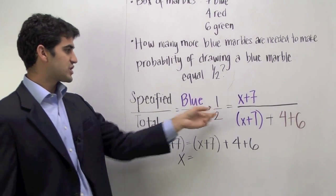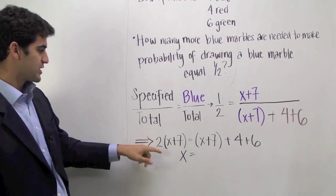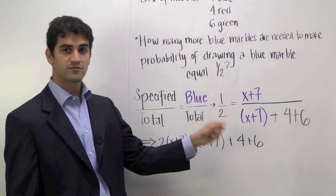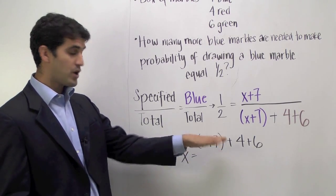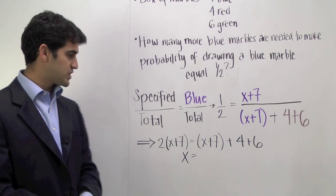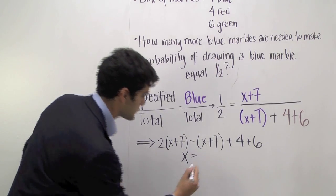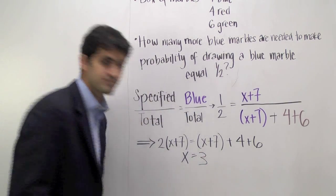So we can just cross multiply and that'll give us the equation 2 times x plus 7 is equal to x plus 7 plus 4 plus 6. Solving for this problem using simple algebraic rearrangement of the equation, we get that x equals 3. And we've solved it.